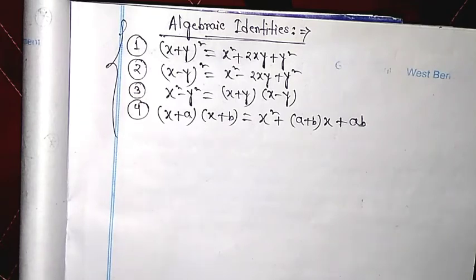These four algebraic identities you have to remember because they are standard results. This is the theory portion of Chapter 2, Polynomials. In the next video, I will discuss the exercise problems of Chapter 2, Polynomials.